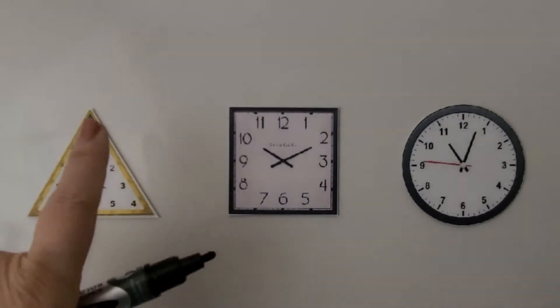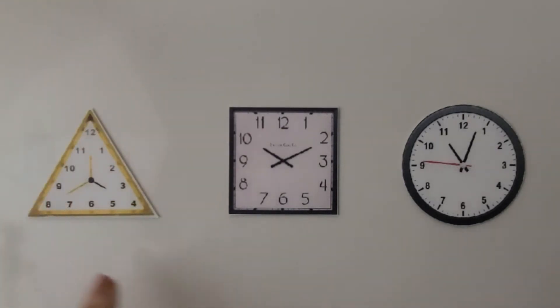This one is in the shape of a triangle. We can see it has three sides. This one is in the shape of a square. It has one, two, three, four sides. And this one is in the shape of a circle. It has curves as it goes around.